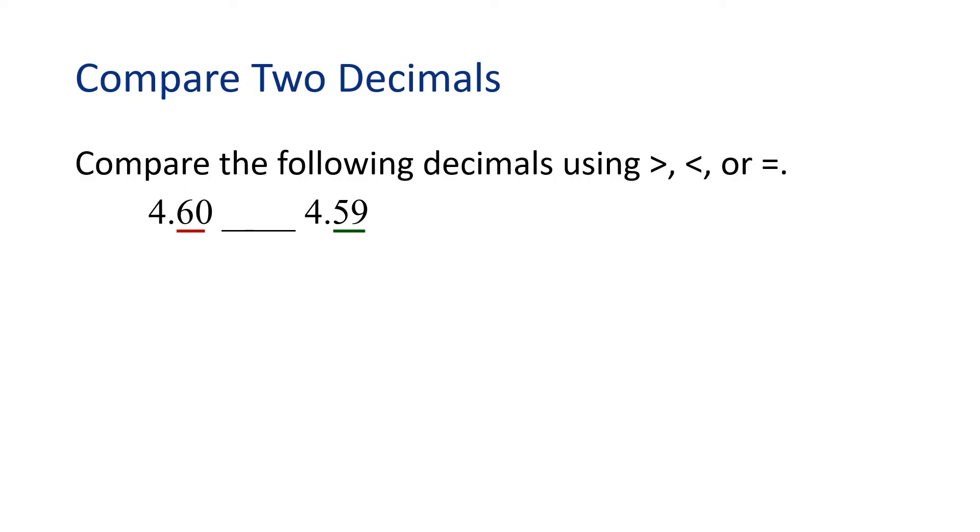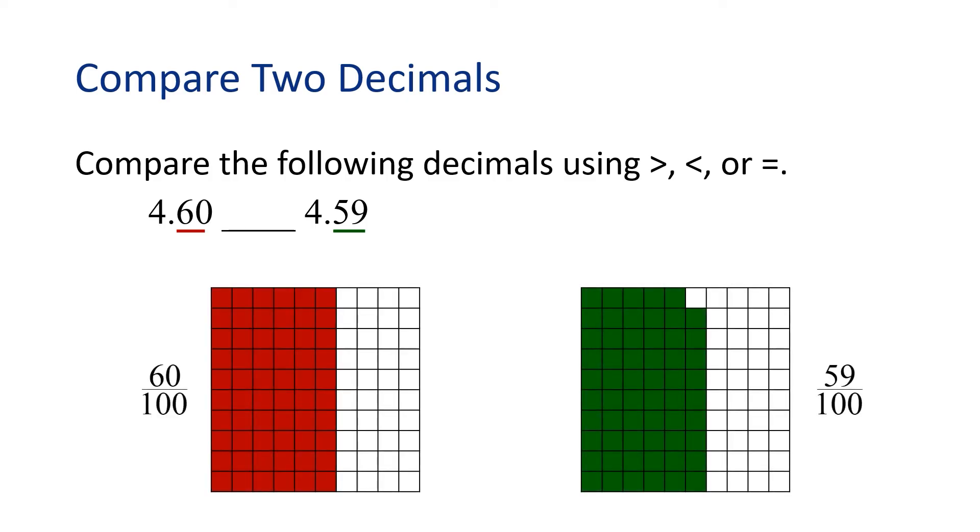Is 60 hundredths greater than, less than, or equal to 59 hundredths? That's right. 60 hundredths is greater than because it has one more shaded square than 59 hundredths. That means 60 hundredths is greater than 59 hundredths. So we can write the greater than symbol in the blank, and the statement reads 4 and 6 tenths is greater than 4 and 59 hundredths.